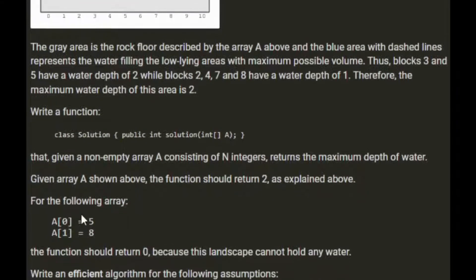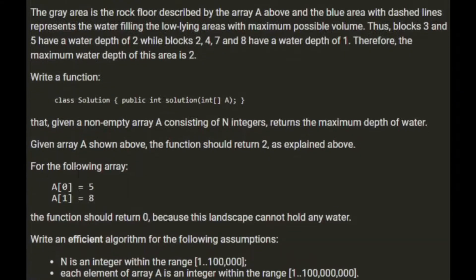For the array A zero five, the function should return zero because the landscape cannot hold any water.